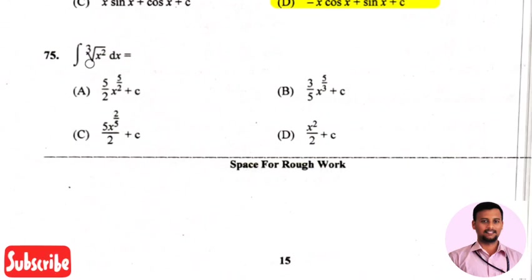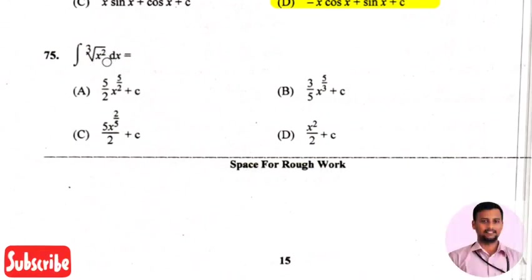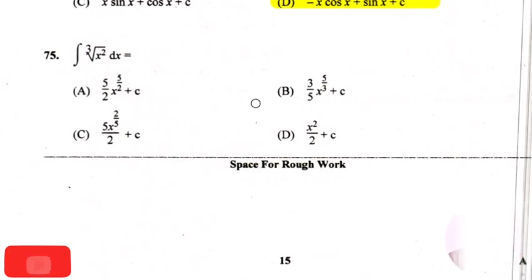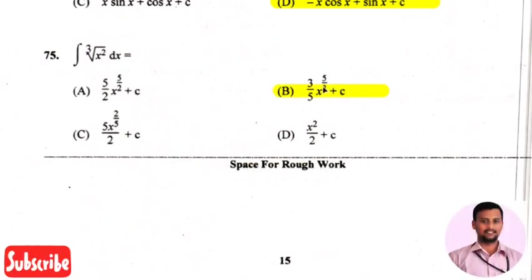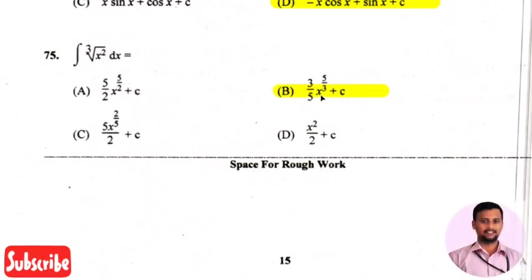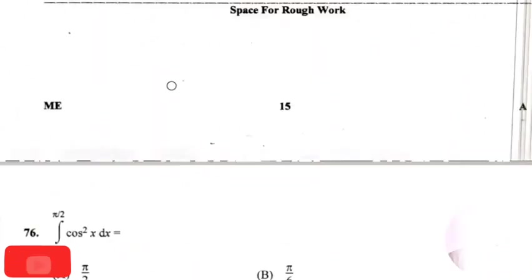The next question: the integration of the cube root of x squared times dx will equal? The right answer is option 2, that is 3/5 times x raised to 5/3 plus integration constant.